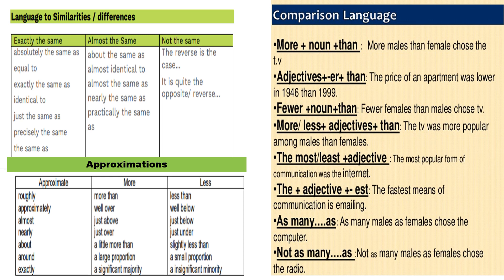You can use 'more or less' with an adjective. For example: the TV was more popular among males than females; the TV was less popular among males than females. So you will use more, less, high, low, highest, lowest, most, and similar comparison words.